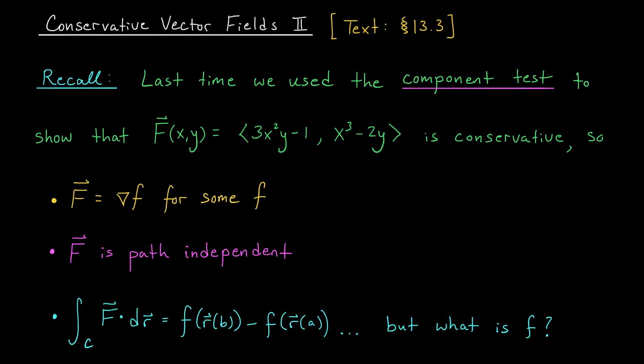Hi everyone, and welcome back. In our last lesson, we introduced a brand new result called the component test, which allows us to decide very efficiently whether or not a given vector field is conservative. We applied this result at the end of the lesson to show that this vector field, f of xy equals (3x²y − 1, x³ − 2y), is indeed conservative.